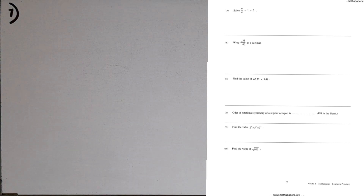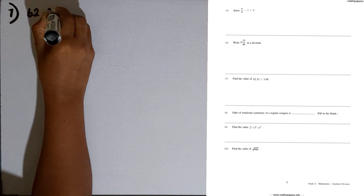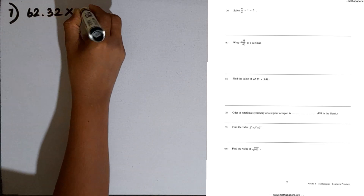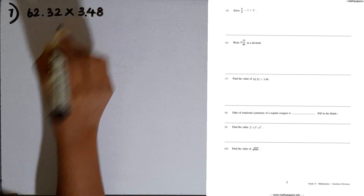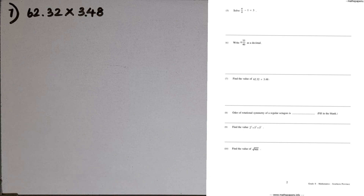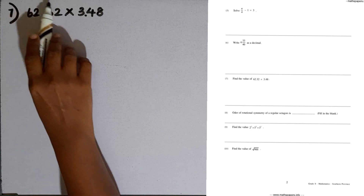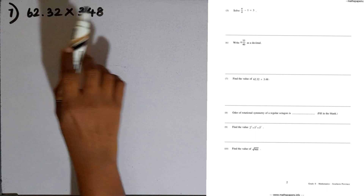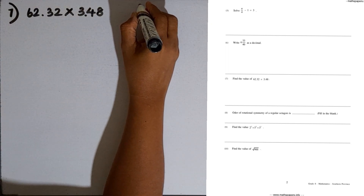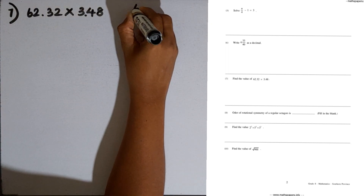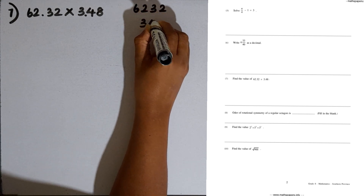Question number 7: find the value of 62.32 multiplied by 3.48. First, we remove the decimal points and take the whole numbers. This gives us 6232 multiplied by 348.